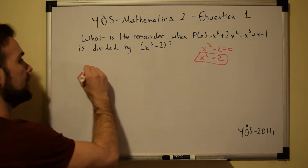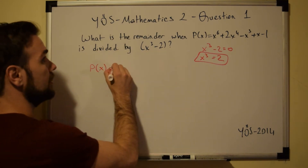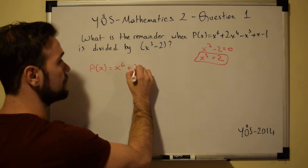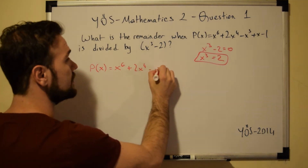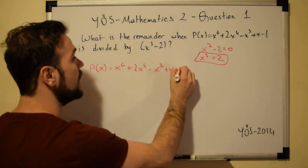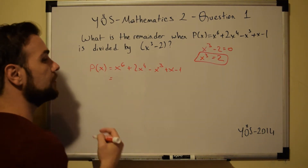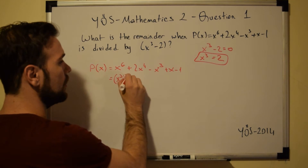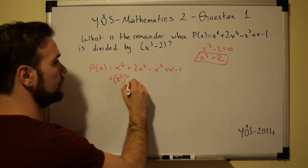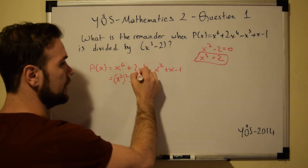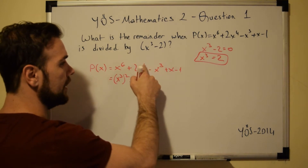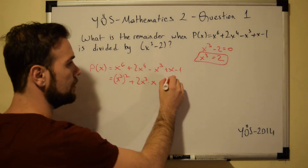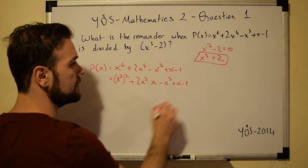So instead of writing x to the power of 3 we substitute 2 for its value. So we have P(x): x to the power of 6 plus 2x to the power of 4 minus x to the power of 3 plus x minus 1. Another way of writing x to the power of 6 is x to the power of 3 all squared, and x to the power of 4 is x to the power of 3 times x.